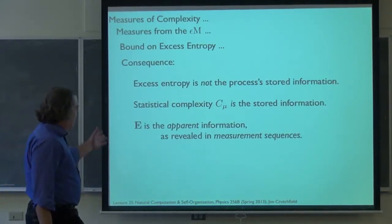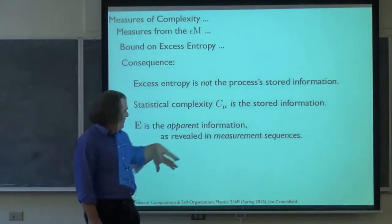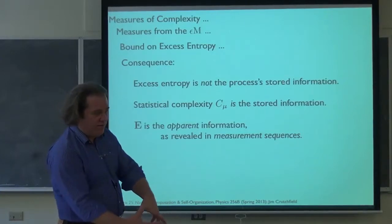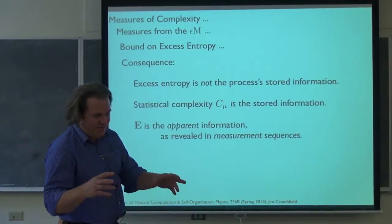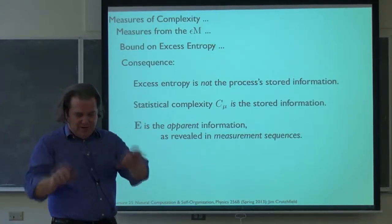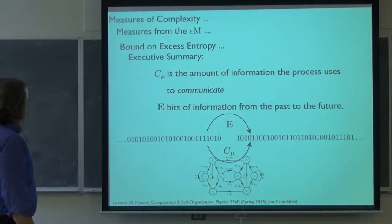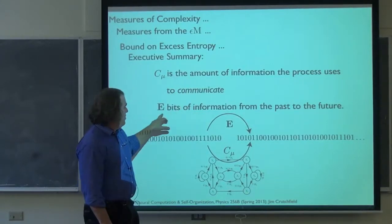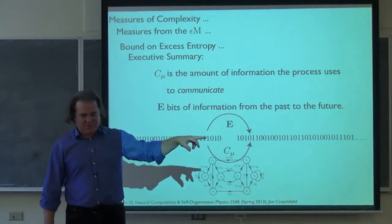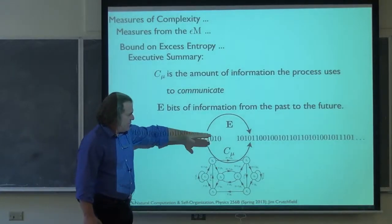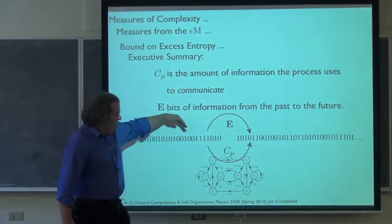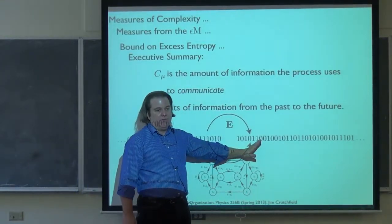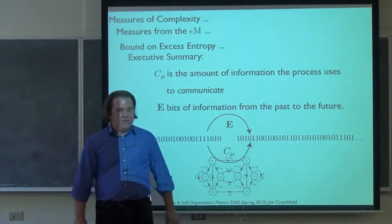Part of what the problem has been is a poverty of language — how are we going to think about these things? One approach: think of E as the apparent information in the measurement sequences. It doesn't directly refer to how many effective states there are or the organization of the internal process. My favorite summary is: C_mu is the amount of information the process uses — it's a mechanism, like a channel — to communicate E bits of information from the past to the future. We have this superficial 'how is the past sequence related to the future sequence' — that's E. But now we're looking at some box with an internal mechanism that's actually implementing it, and that's where C_mu comes in. C_mu can be very large even if the process appears to be close to a good random number generator.